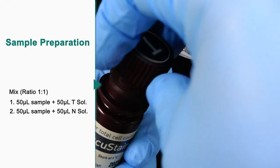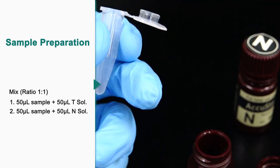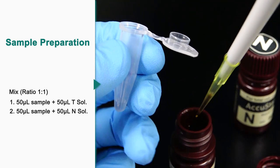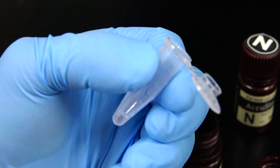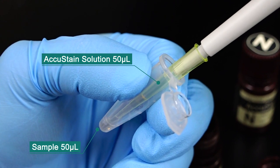Third, sample preparation. There are two types of AccuStane solution. T solution is for total cell and N solution is for non-viable cell. Mix 50μL of the sample with 50μL of T or N AccuStane solution.